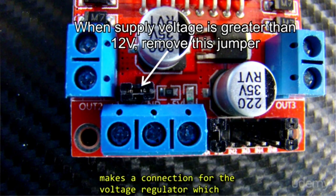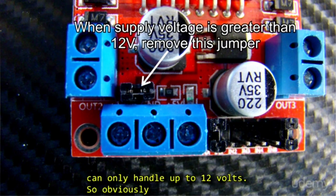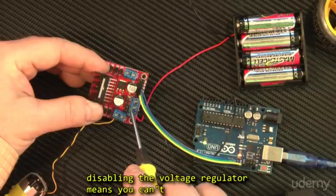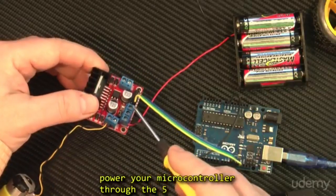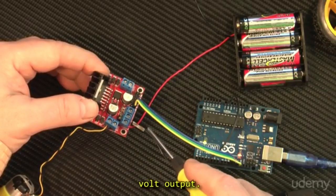This makes a connection for the voltage regulator which can only handle up to 12 volts. So obviously, disabling the voltage regulator means you can't power your microcontroller through the 5 volt output.